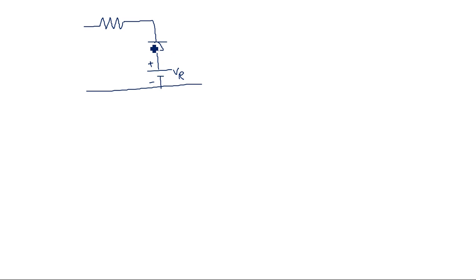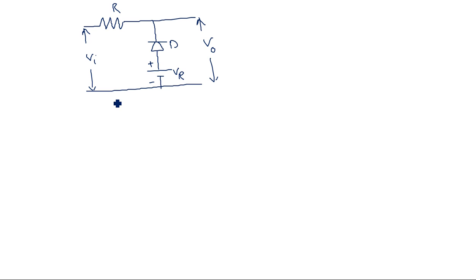Comparing this diagram to the previous one, here the diode is used in the reverse bias condition, and it is that reverse bias condition which makes the difference between clipping above and clipping below the reference voltage level. This is the output V0, input voltage Vi, resistor R, and diode D. Now consider the two possible cases. Case 1: input voltage Vi is less than the reference voltage VR.